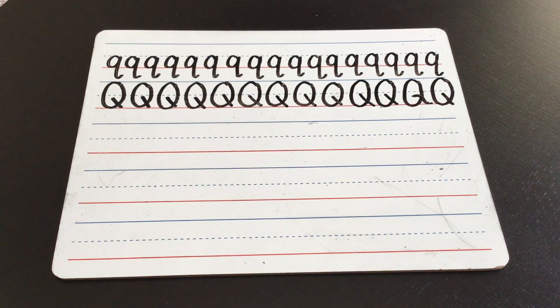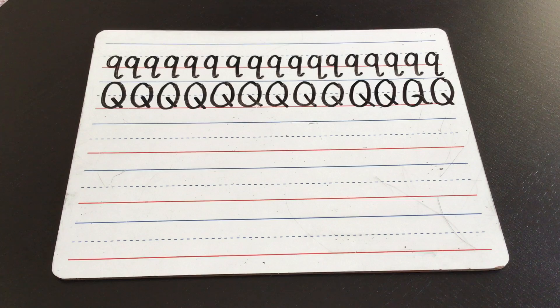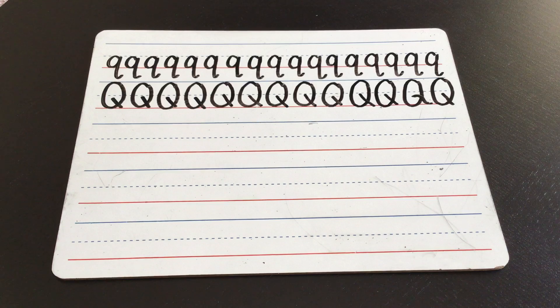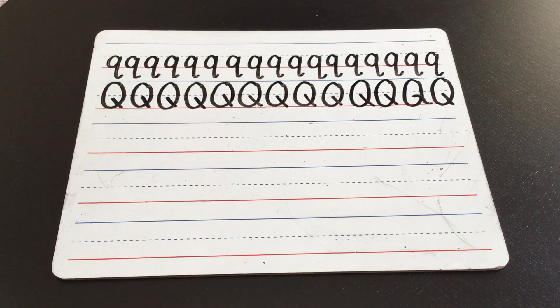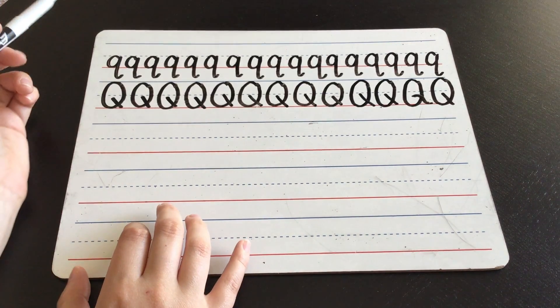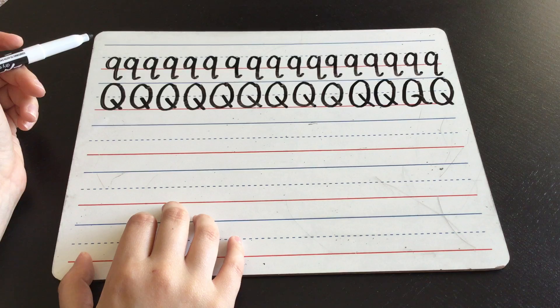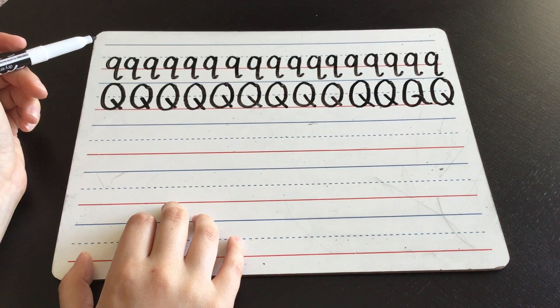writing a sentence that has both the capital Q and the lowercase q in it. So let's write the sentence, Quarrelsome queen wants to ask a quick question. Quarrelsome queen wants to ask a quick question. Do you think we can do it? Quarrelsome queen wants to ask a quick question.